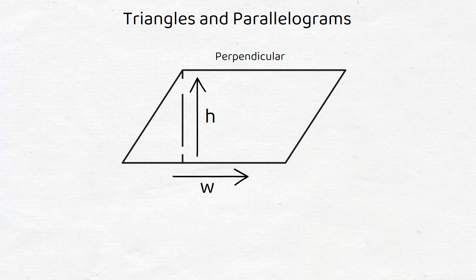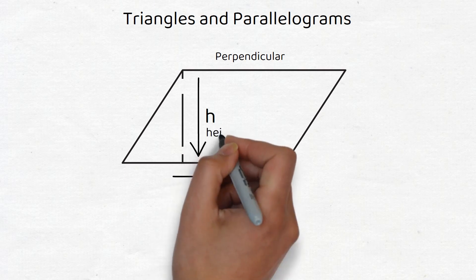Two lines are said to be perpendicular when they intersect at a right angle. Thus, the way we find the height of a parallelogram is by drawing a perpendicular line from the top to the bottom side. The length of this perpendicular line is what we call the height.